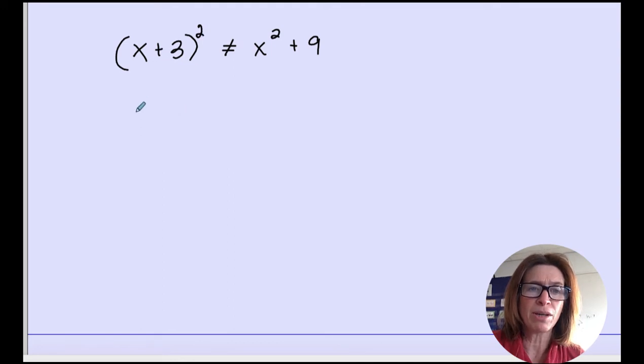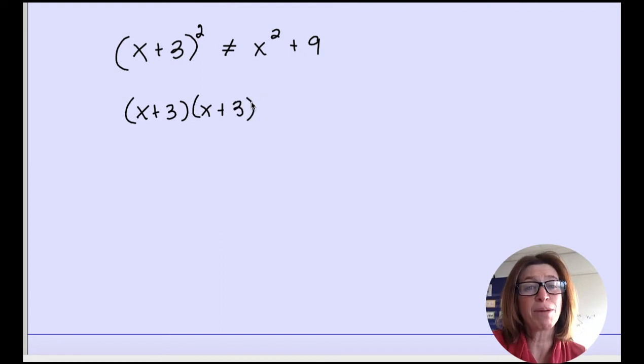Remember that when you square something, it's the same thing as multiplying by itself. So you actually have to multiply these binomials. Now, you could do that in several ways. Some of you learned some technique called FOIL. It just really means the distributive property twice.